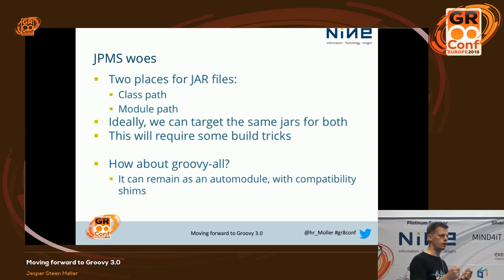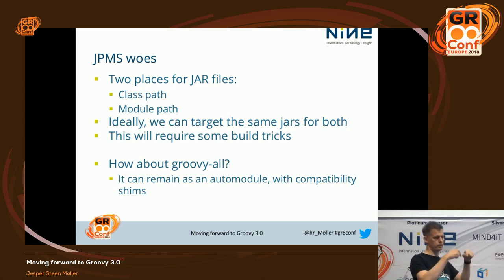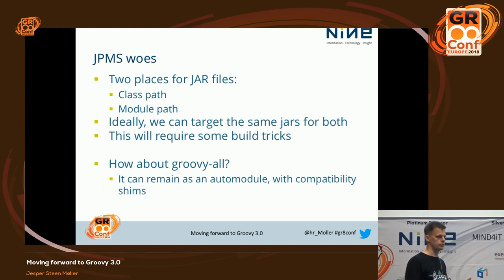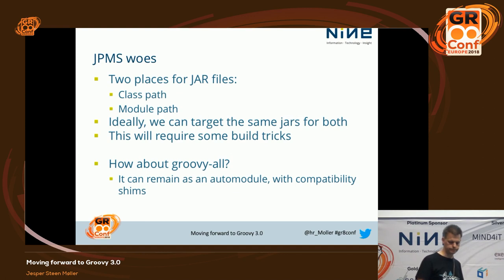For people who aren't interested in JPMS, that means we could have a compatibility library that would basically fill the holes of those classes that need to move. We could include that in GroovyAll, and people wouldn't have to change a lot of their code — or maybe not even recompile. We could provide some compatibility shims there.